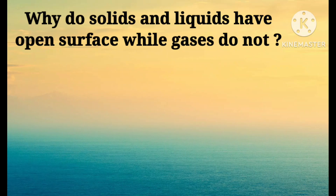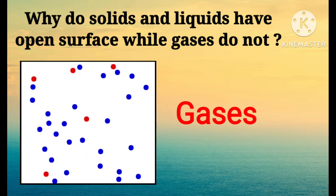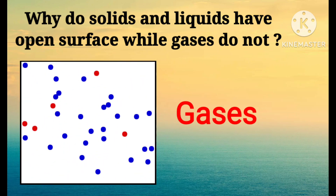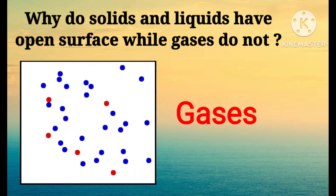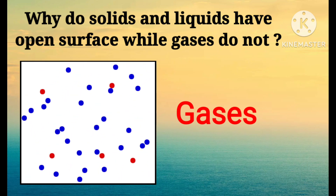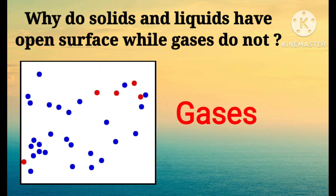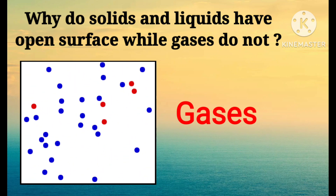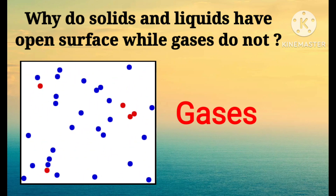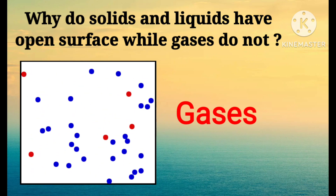Why do solids and liquids have an open surface, while gases do not? We know that particles of matter are constantly moving. In solids, the constituent particles are able to vibrate only due to high intermolecular forces of attraction. In liquids, the particles are able to move, but the forces of attraction are strong enough to keep them stuck together.